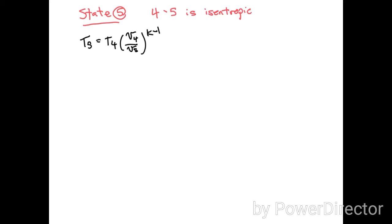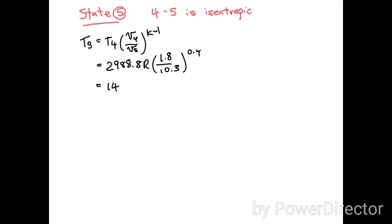To find state five we use the fact that expansion from four to five is an isentropic process, so we apply the isentropic formula. We know T4, the volume ratio is 1.8 divided by 10.3, and k for air is 1.4 so k minus 1 is 0.4. Solving gives T5 = 1487.5 Rankine.